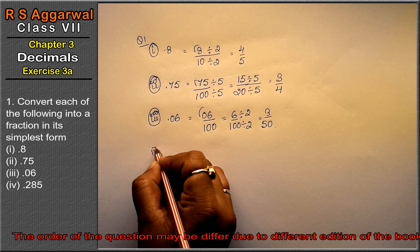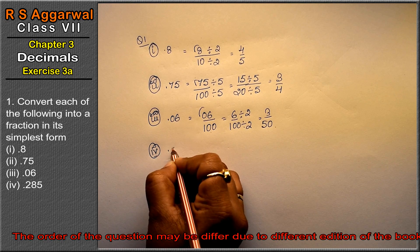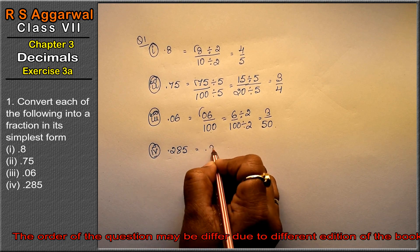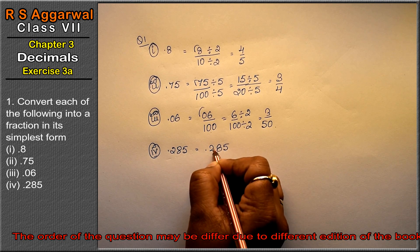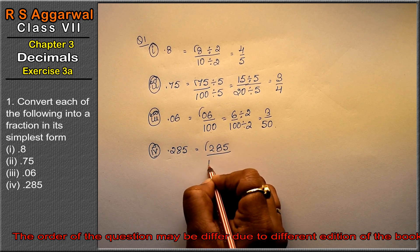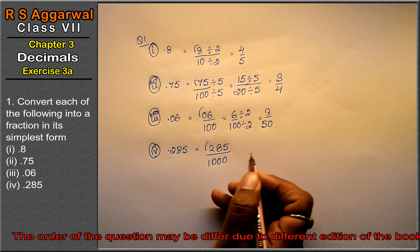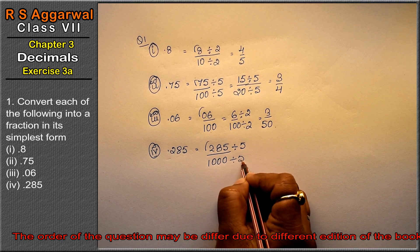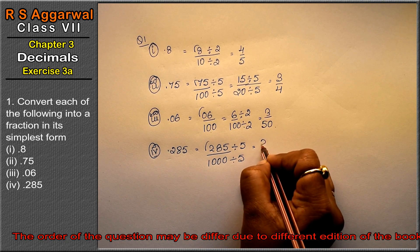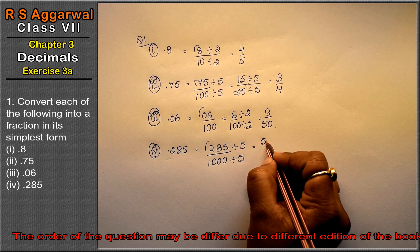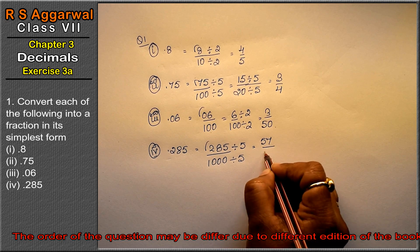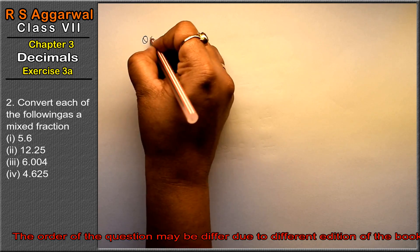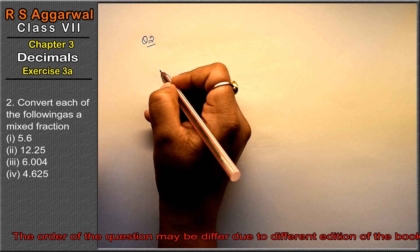Let's do the fourth part. Fourth part is 0.285. We write it as 285 over 1000. Dividing both by 5 gives 57 over 200, and that is the answer. Now let's do question number 2 of exercise 3a, that is decimals.